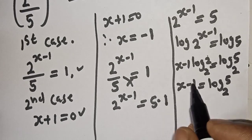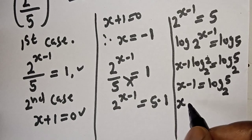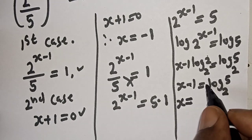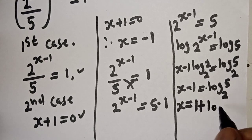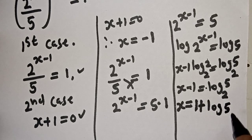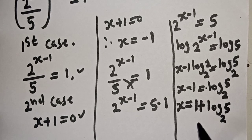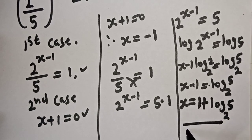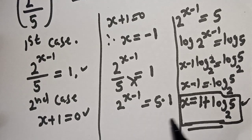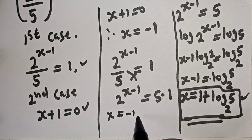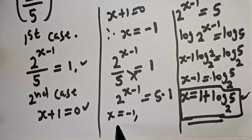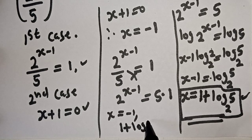Since we are looking for the value of s, moving the 1 to the other side gives s equals 1 plus log 5 base 2. This is the final answer. Therefore, the value of x is equal to minus 1 and 1 plus log 5 base 2.